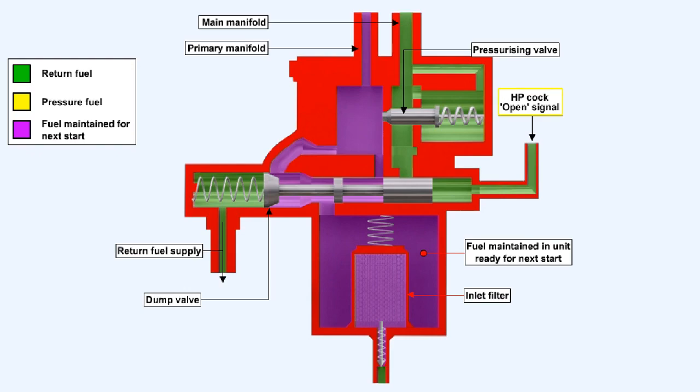The FADEC system will monitor all of the normal engine parameters and prevent limitations being exceeded while controlling the engine through all modes of operation, for example, starting, idle, acceleration and deceleration, takeoff, climb, and cruise. In other words, it controls the engine in response to the throttle lever position or the flight management computer thrust demand.